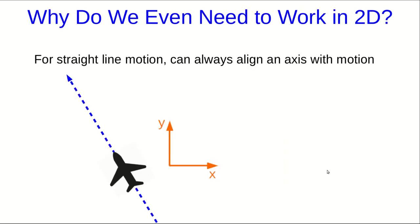As long as we're talking about motion in a straight line, it might occur to you to wonder why we even need to be able to work in two dimensions. After all, for motion in a straight line, you can always choose your axes so that the motion lies along the line. So for this airplane, you could choose axes so that, for example, the y-axis points along the motion.